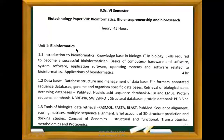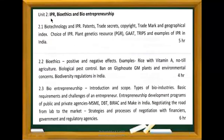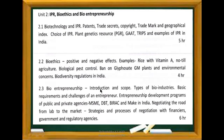Unit 1 also includes a brief account of genomics — structural and functional — transcriptomics, metabolomics and proteomics. Unit 2 covers IPR, Bioethics and Bio-entrepreneurship. Unit 2.1 includes biotechnology and IPR: patents, trade secrets, copyright, trademark, geographical index, choice of IPR, and plant genetic resources (PGR). Unit 2.2 covers bioethics — positive and negative effects, examples like rice with Vitamin A, no-till agriculture, biological pest control, GM plants and environmental concerns, and biodiversity regulations in India.